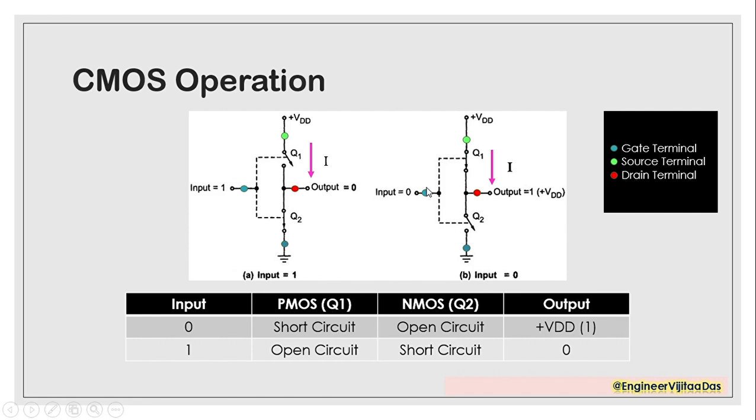So whenever we give input as 0, we will get output as VDD or logic 1. And whenever we give input as 1, we will get the opposite, that is output as 0.